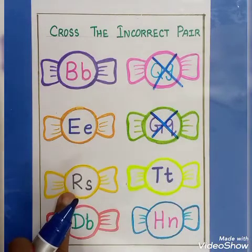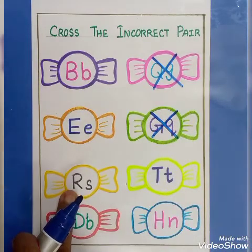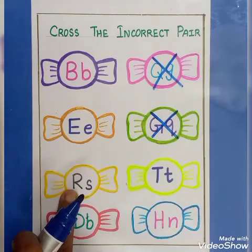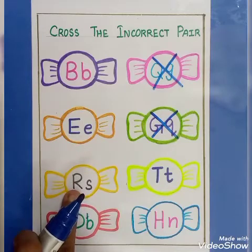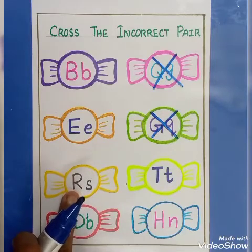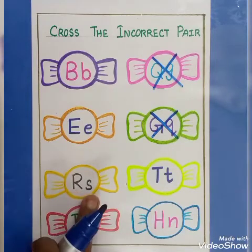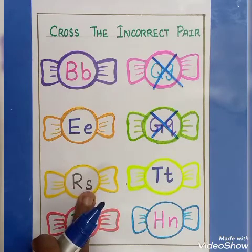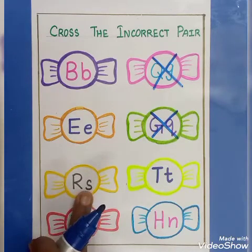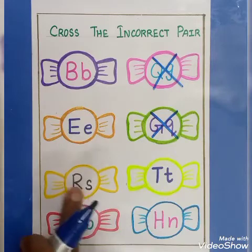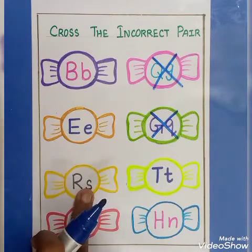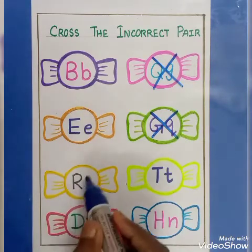Put cross. This is capital letter R. This one is small letter S. This pair is correct? No.